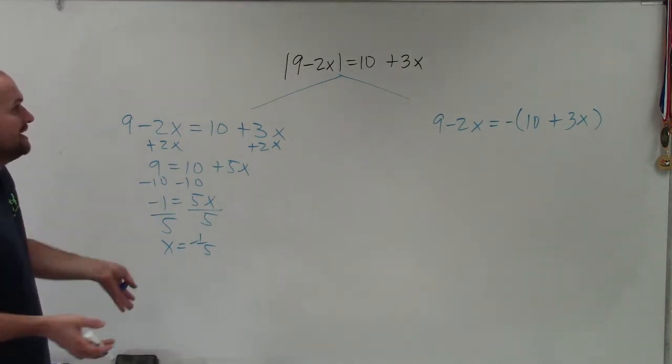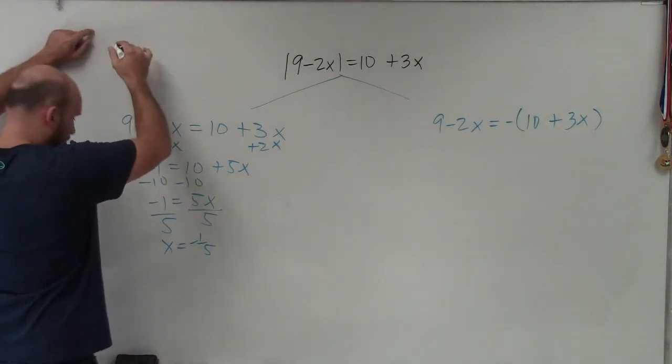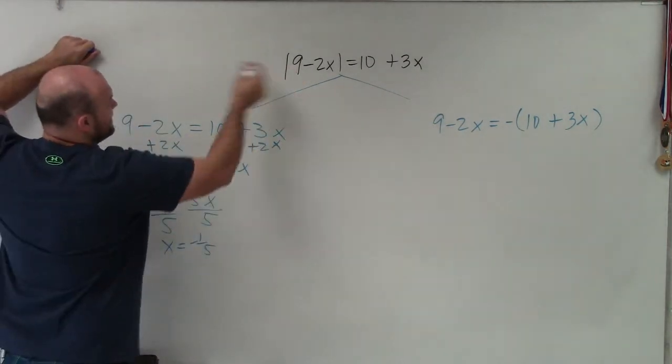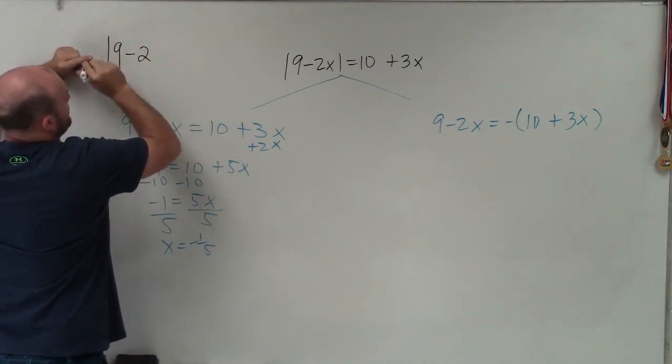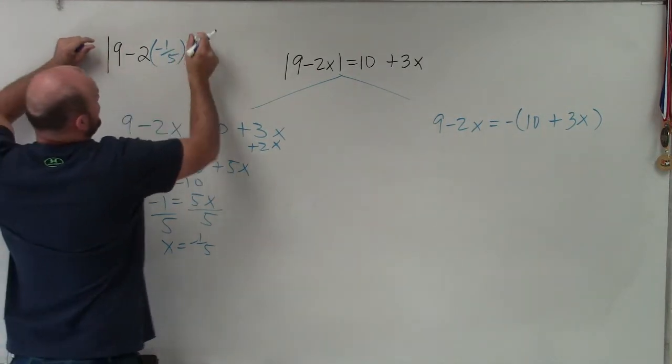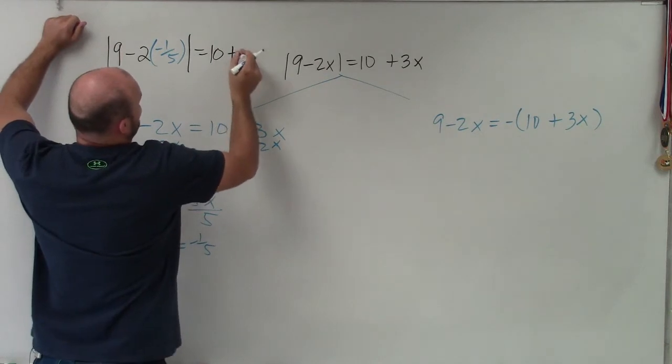Now what I want to do is go ahead and obviously check my answer, make sure that it is a solution. So to do that, all I'm simply going to do is rewrite the equation, but now plug in a negative 1 fifth in for x. And I already made the mistake earlier by not using the negative 1 fifth.